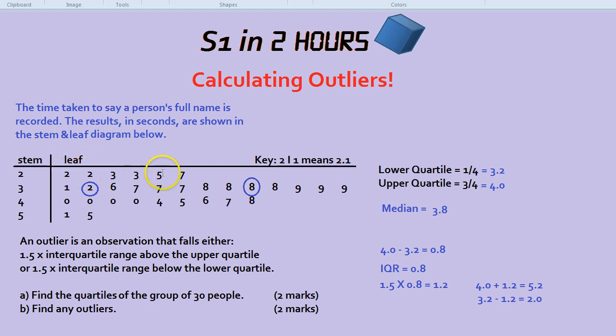One, two, three, four, five, six, seven, eight. So the person who took 3.2 seconds is the lower quartile. That's 3.2 seconds.